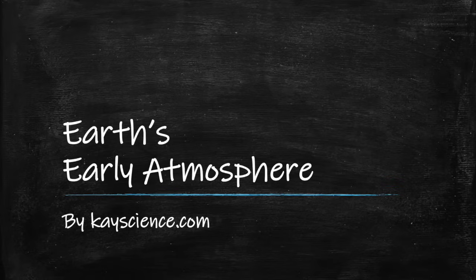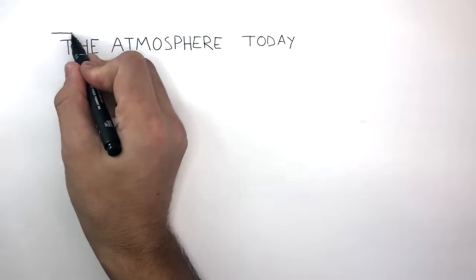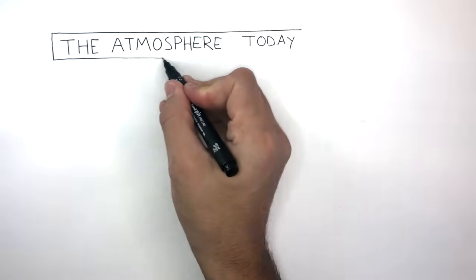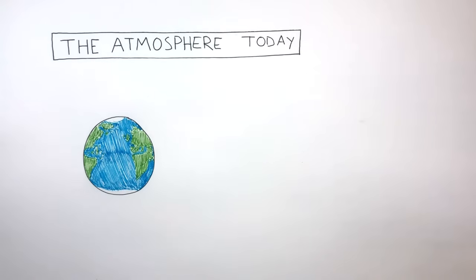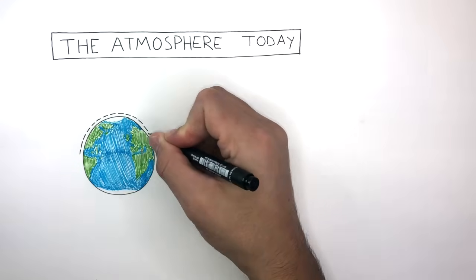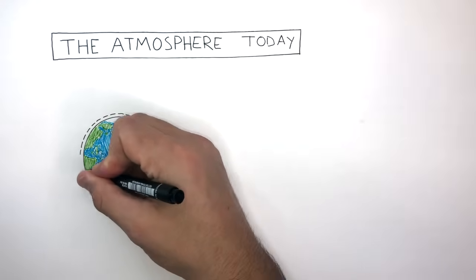Earth's Early Atmosphere by kscience.com. The atmosphere today is very different compared to Earth's early atmosphere. Here is a simple diagram of Earth and this dashed line going around Earth represents the atmosphere.